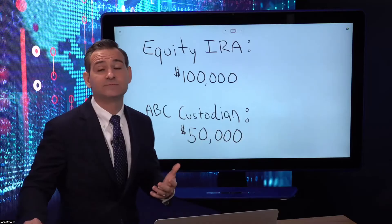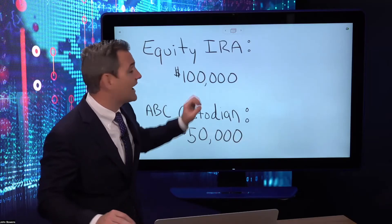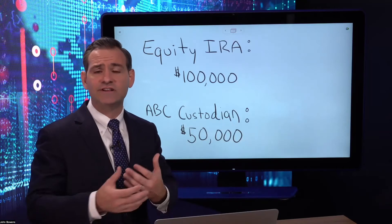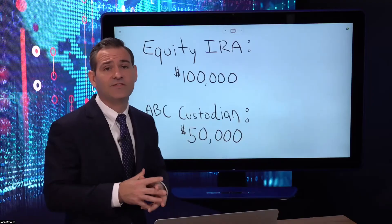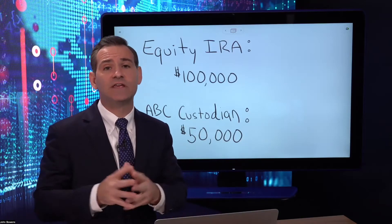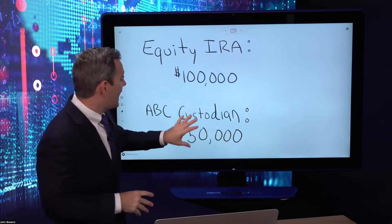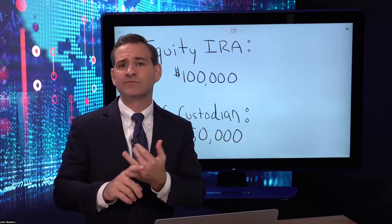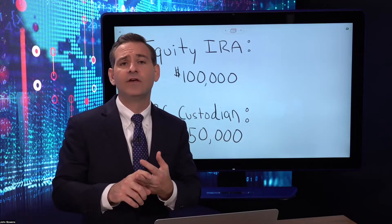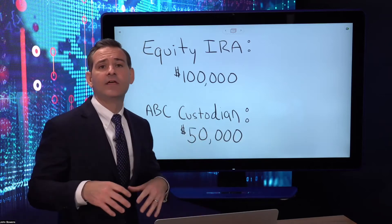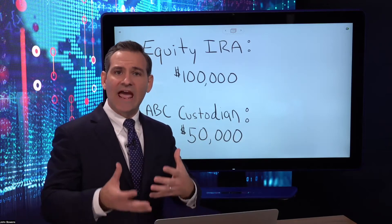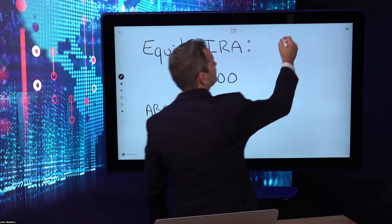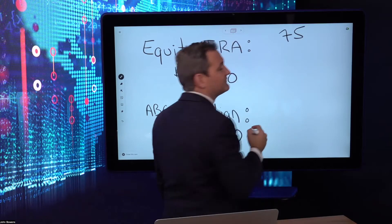Let's talk about what assets John Smith might have in his Equity Trust IRA. Let's assume he has some precious metals, maybe some real estate, and maybe some private securities—and very little to no cash in the IRA. However, with ABC custodian, John has $50,000 in stocks, ETFs, and money market accounts—assets he can easily sell and get cash from to satisfy a required minimum distribution. In this example, John Smith is 75 years old.